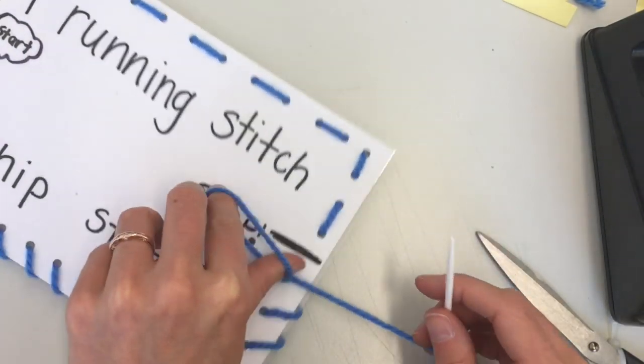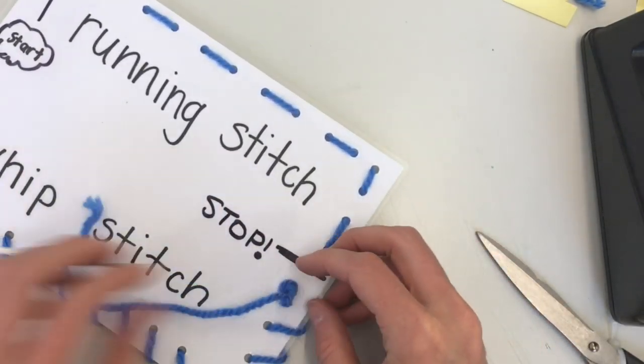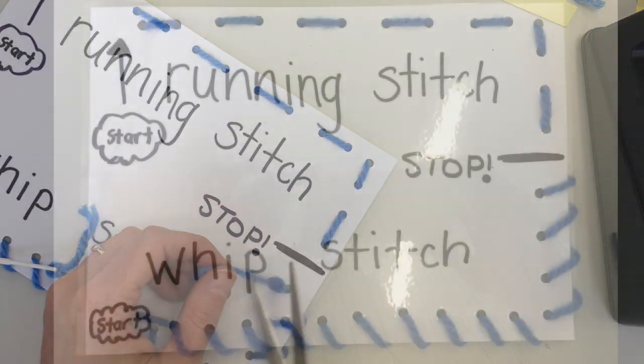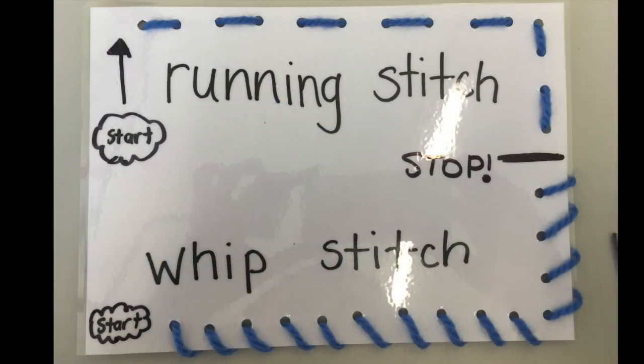Now I need to tie a knot at the end of my thread because I'm finished my project. And there you have it! Today you will practice a running stitch and a whip stitch and try to tie a knot.